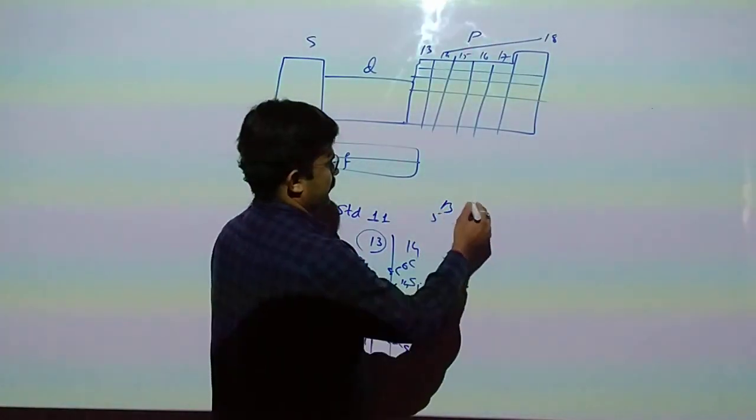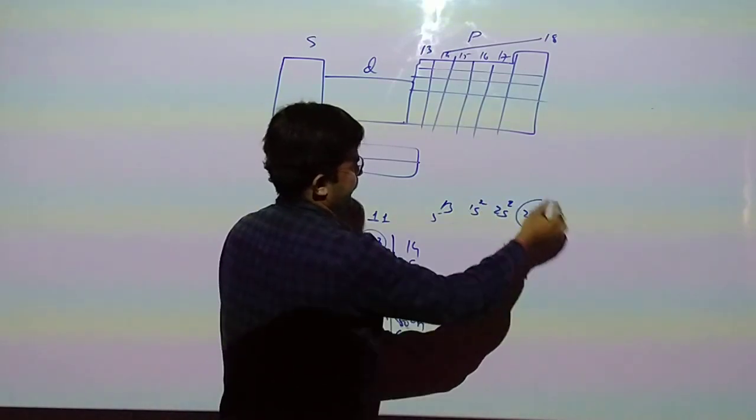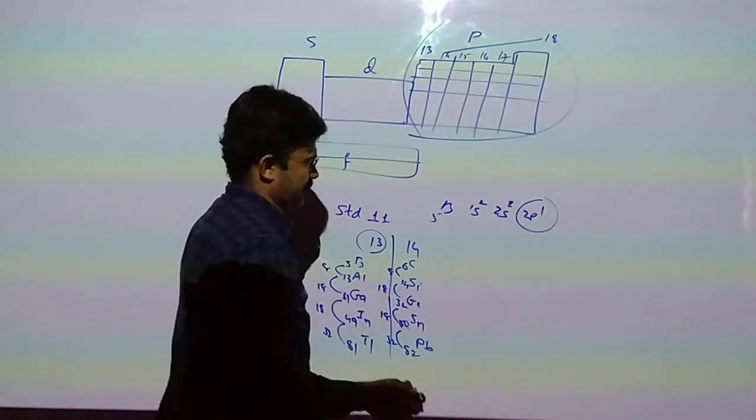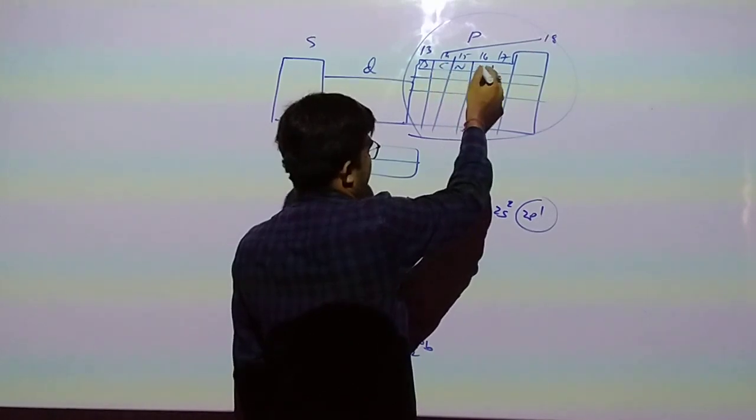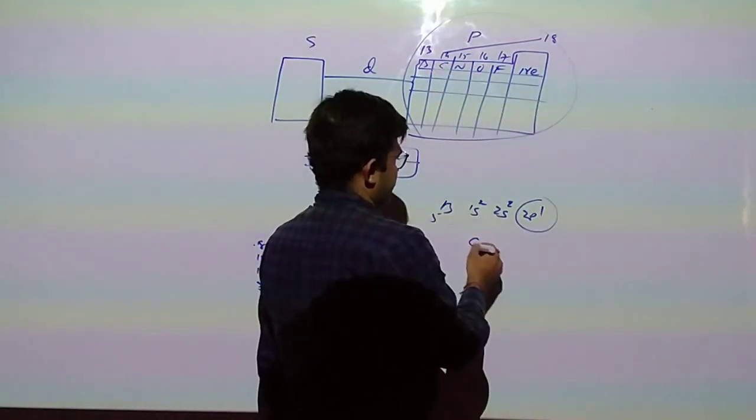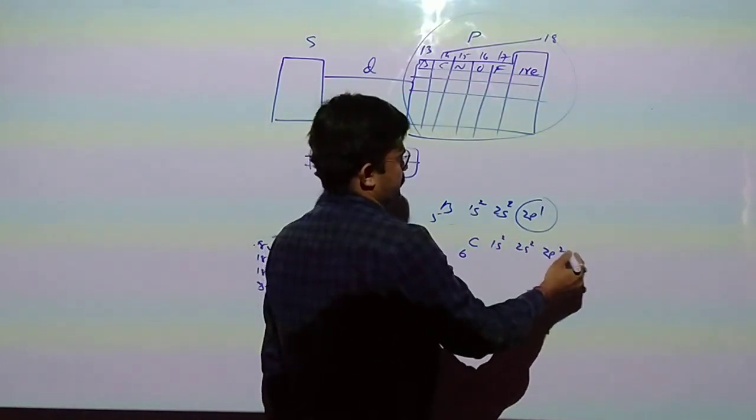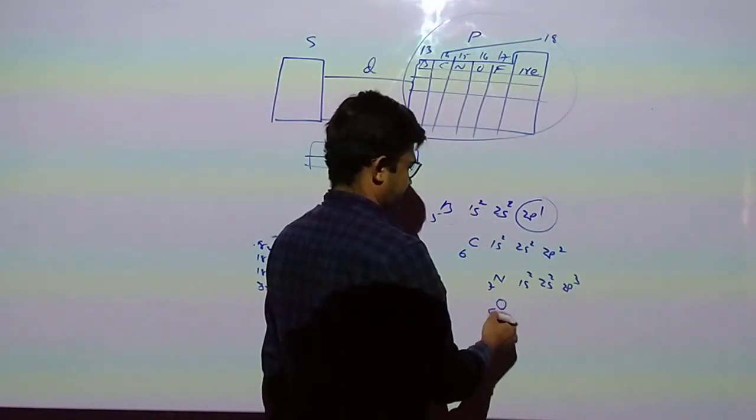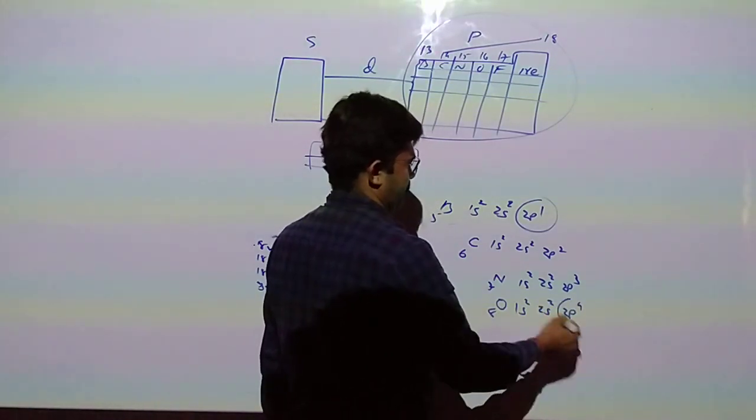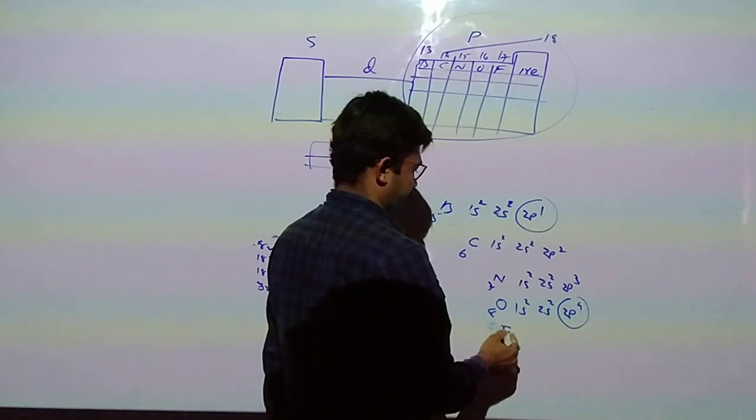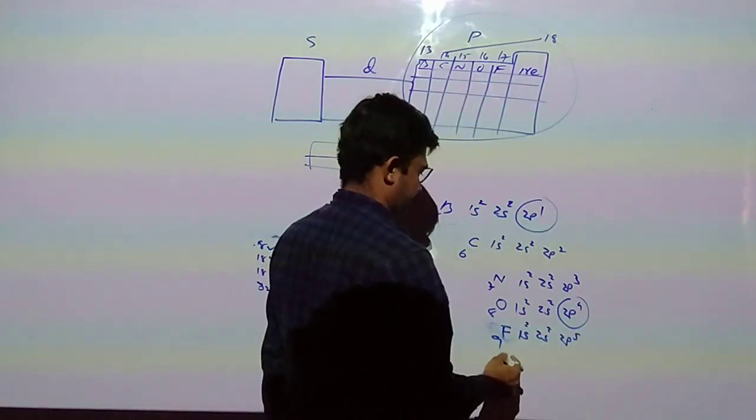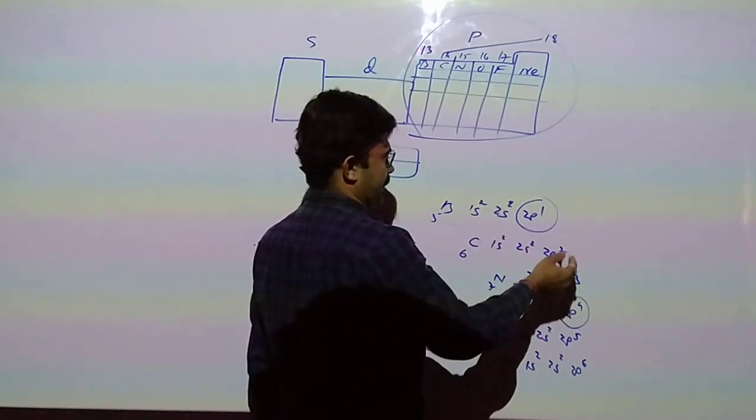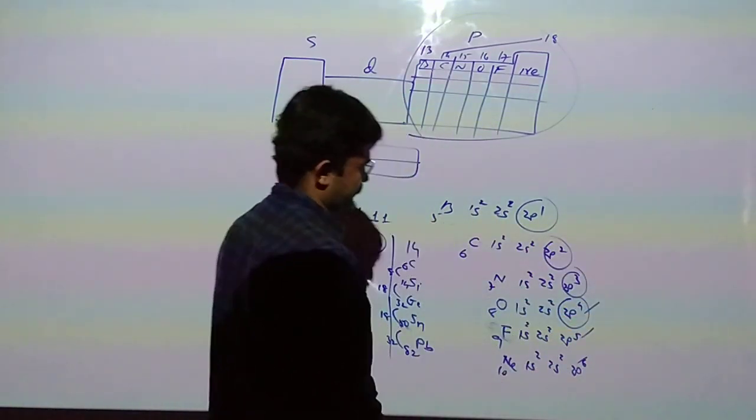In Boron, atomic number 5, 1s2 2s2 2p1. Last entered electron comes in a p orbital, which is called the p-block elements. In Carbon 1s2 2s2 2p2, in Nitrogen 1s2 2s2 2p3, in Oxygen 1s2 2s2 2p4. Our last coming electron enters in a p orbital, so which is p-block element.